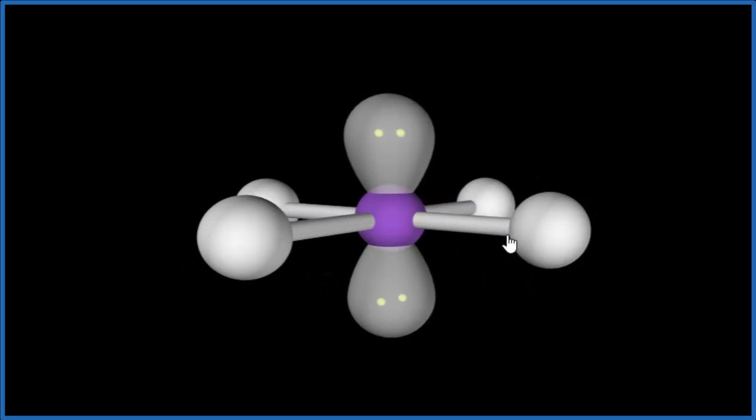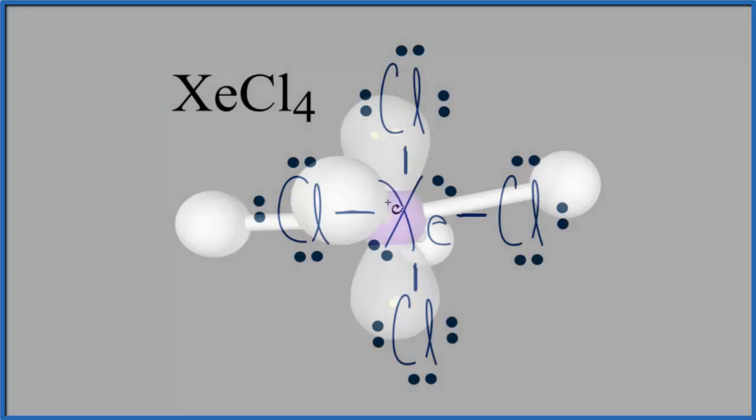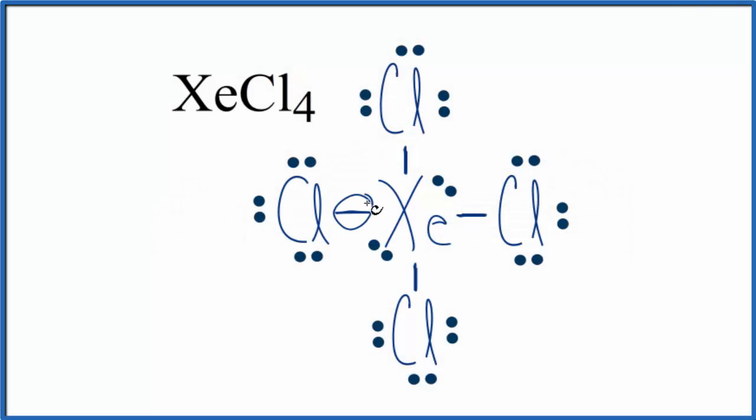Xenon tetrachloride, that's a nonpolar molecule. Let's go back to our Lewis structure again. So, even though in this bond here between xenon and the chlorines, it's polar and the electrons will spend more time with the chlorine, each one of these bonds has that happening. And, it's symmetrical. We looked at the molecular geometry. So, they cancel out.